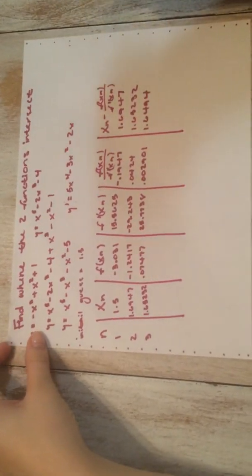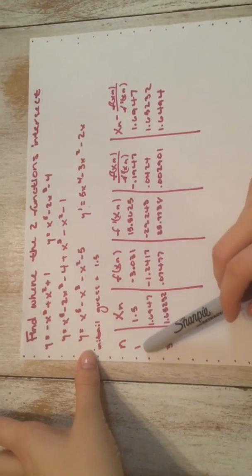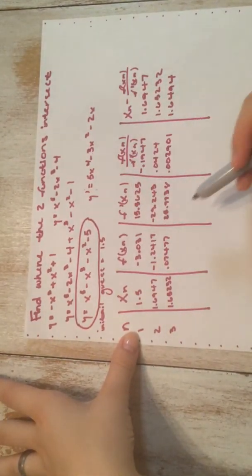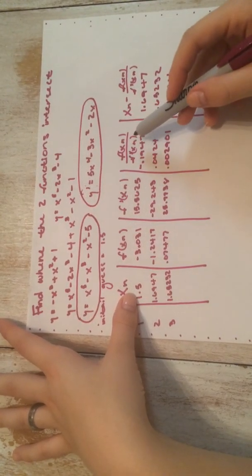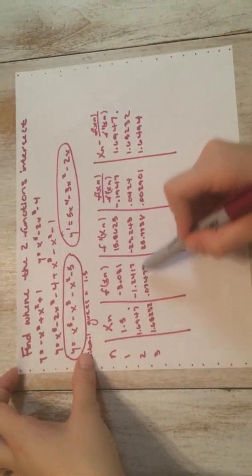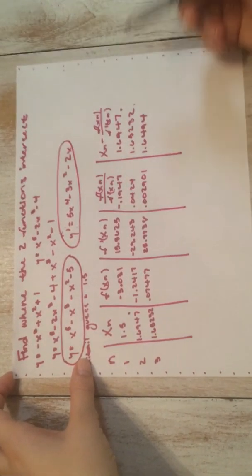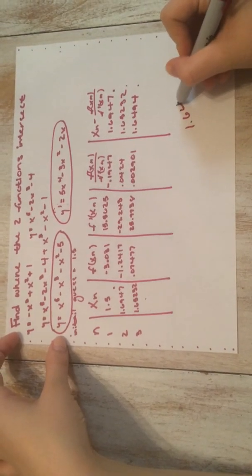The estimated answer is usually still kind of far from the real zero. So we take that result and bring it to the next row as the second iteration, going through the whole process again. You continue until you're within the accuracy you want — it will either say perform two or three iterations, or get within 0.001. If two consecutive iterations are within 0.001 of each other, that is your answer.